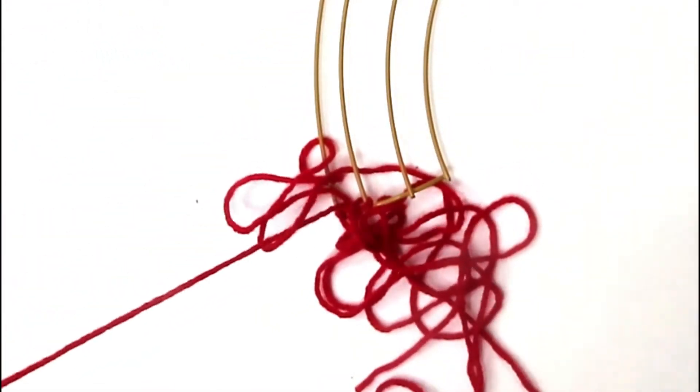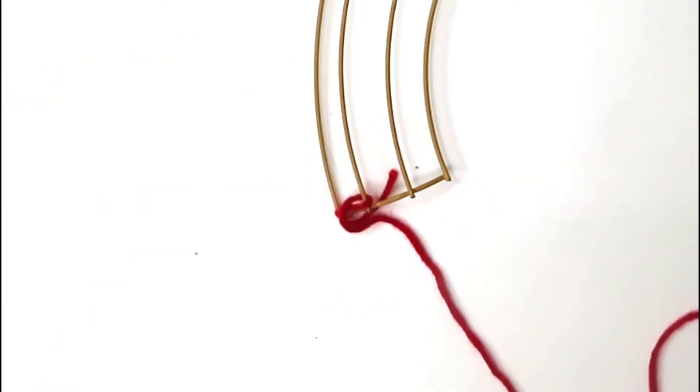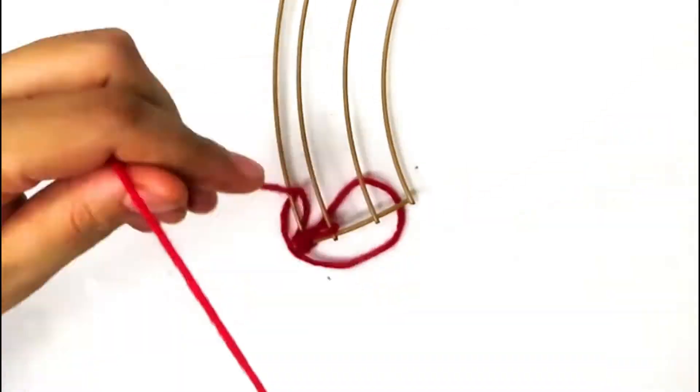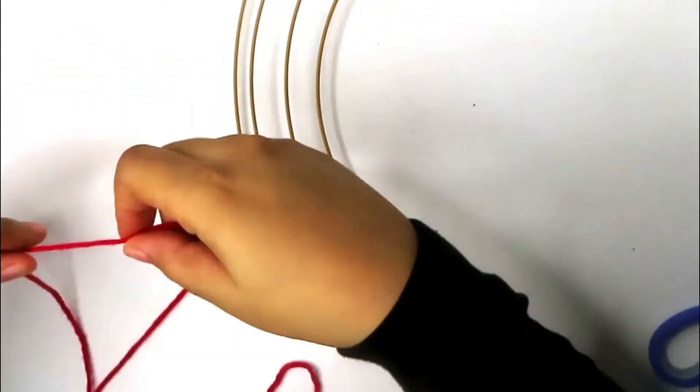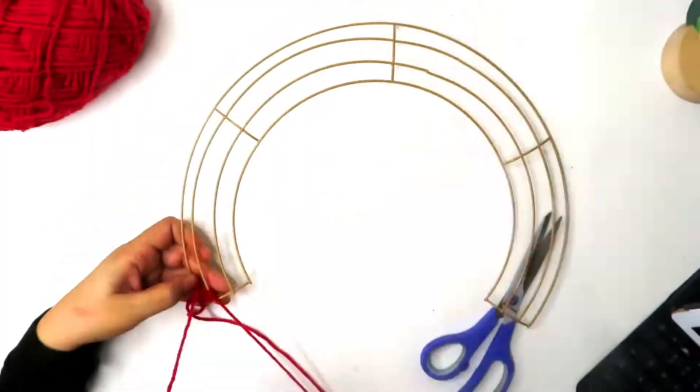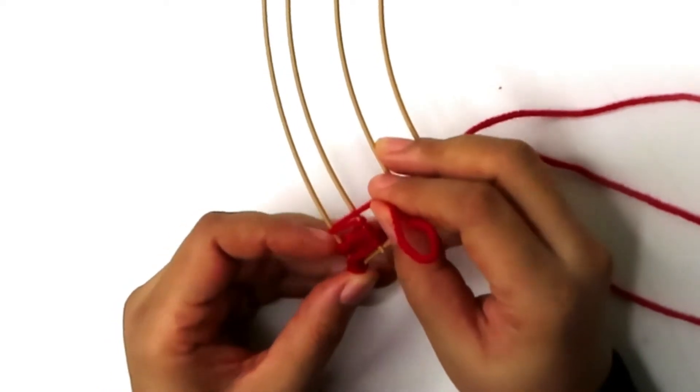Continue with the figure eight motion around the first two posts until you've filled up the entire first section. Make sure that you push the yarn as close together as possible.